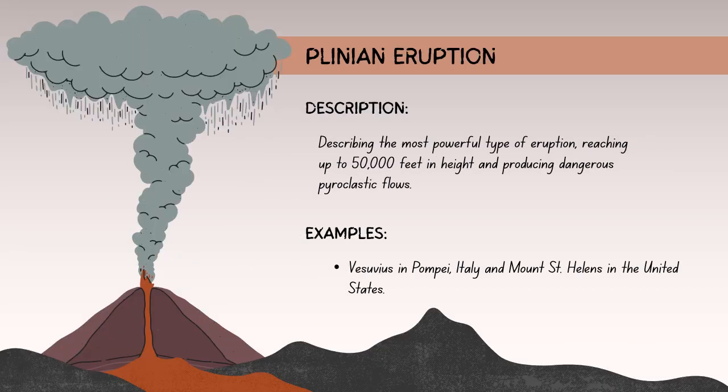A Plinian eruption is a highly explosive volcanic event named after Pliny the Younger, the Roman historian and naturalist who documented the eruption of Mount Vesuvius in 79 A.D. Plinian eruptions are characterized by the eruption column reaching great heights — often tens of kilometers — producing vast amounts of volcanic ash and debris. Large volumes of gas-rich magma are rapidly expelled, and the collapse of the eruption column can lead to pyroclastic flows. These are among the most powerful volcanic events, with the potential to impact global climate by injecting ash and aerosols into the upper atmosphere.